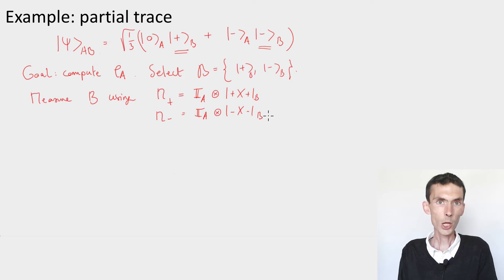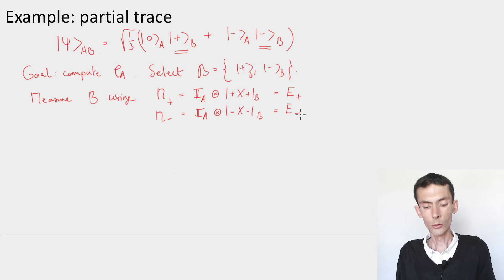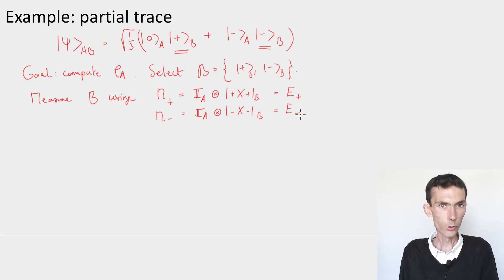tensored rank one projection on minus for B. And because this is a projective measurement, we can take as Kraus operators the same as our POVM elements. So now let's compute what the distribution on outcomes is and what the post-measurement states are.